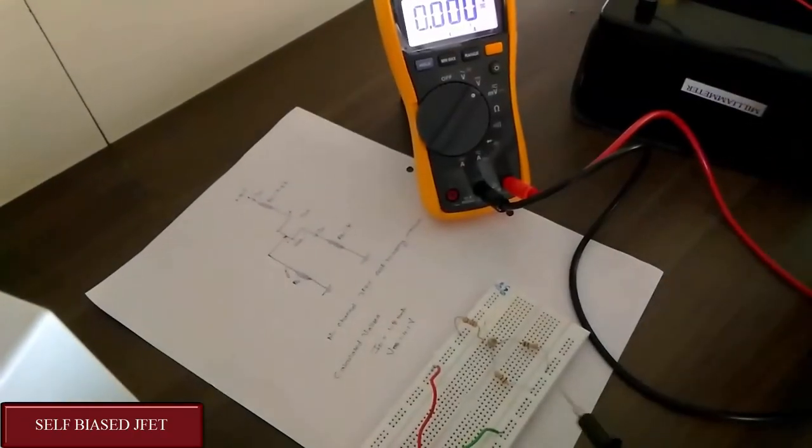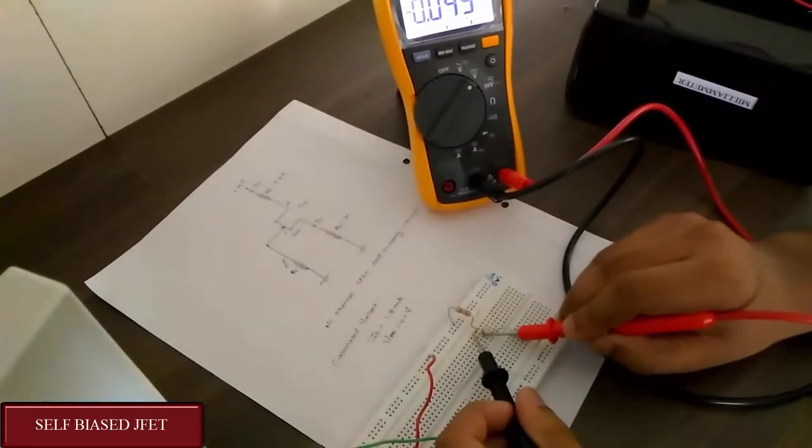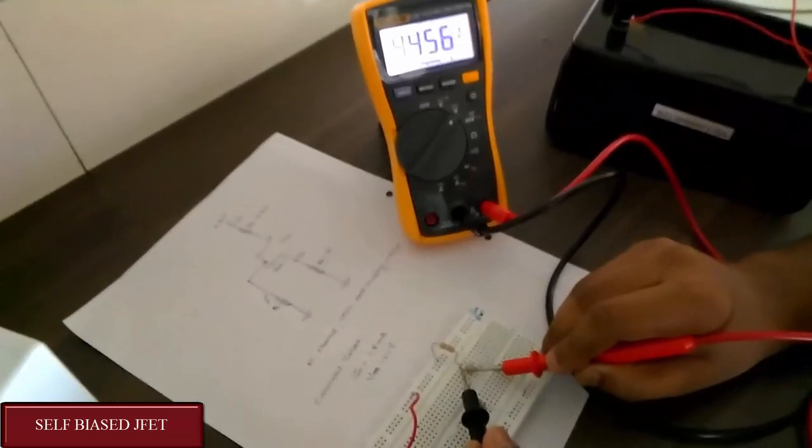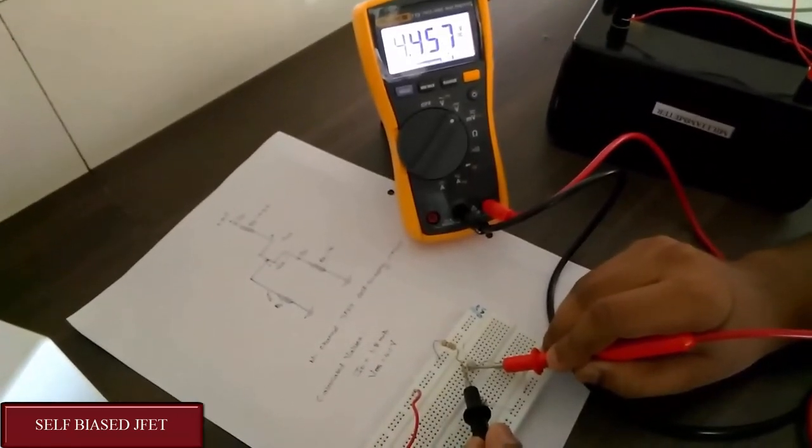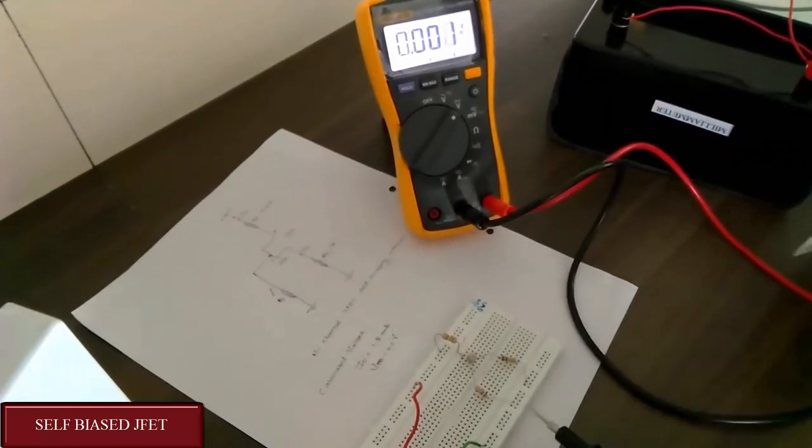So now we are going to observe the value of VDS from drain to source. As you can see we are getting the reading of 4.45V which is somewhat similar to our calculated value of 4.1V.